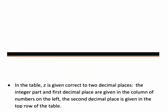And in a table, z is given correct to two decimal places. The integer part, that is the whole number part and the first decimal place, are given in the column of numbers on the left. And the second decimal place is usually given on the top row of the table. So we'll see how this table looks in just a minute in the context of the following example.